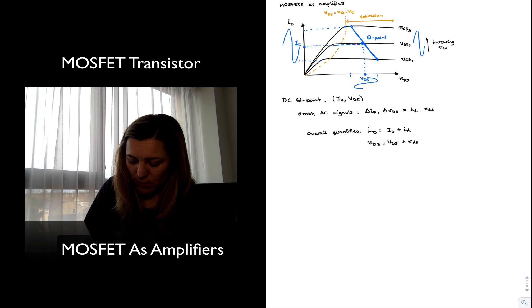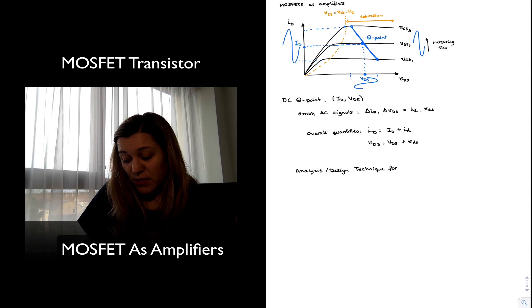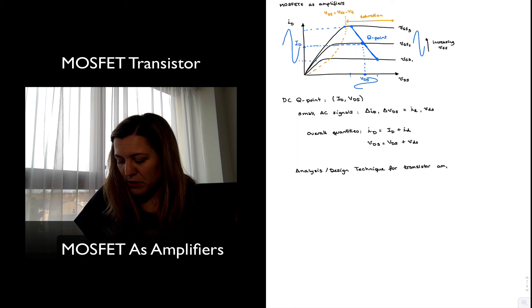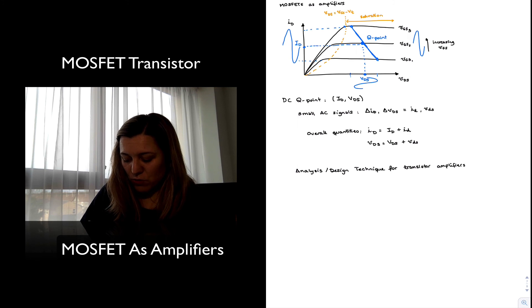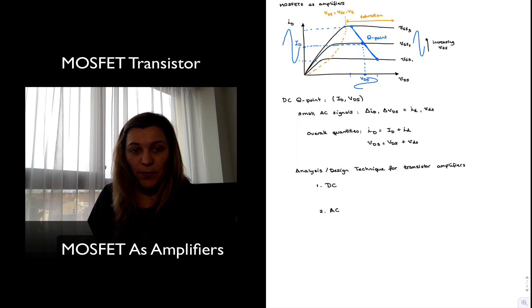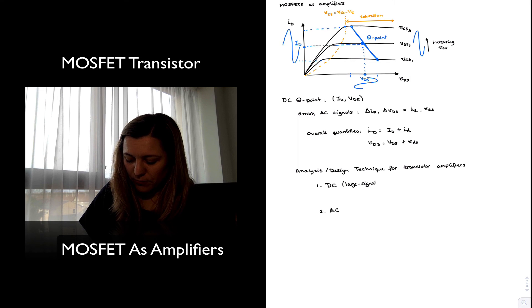And so from now on, my analysis and design technique for transistor amplifiers really, but in this particular case for MOSFET amplifiers, is going to consist into the DC portion of the design or analysis and the AC portion. The DC also referred to as the large signal. The AC also referred to as the small signal.